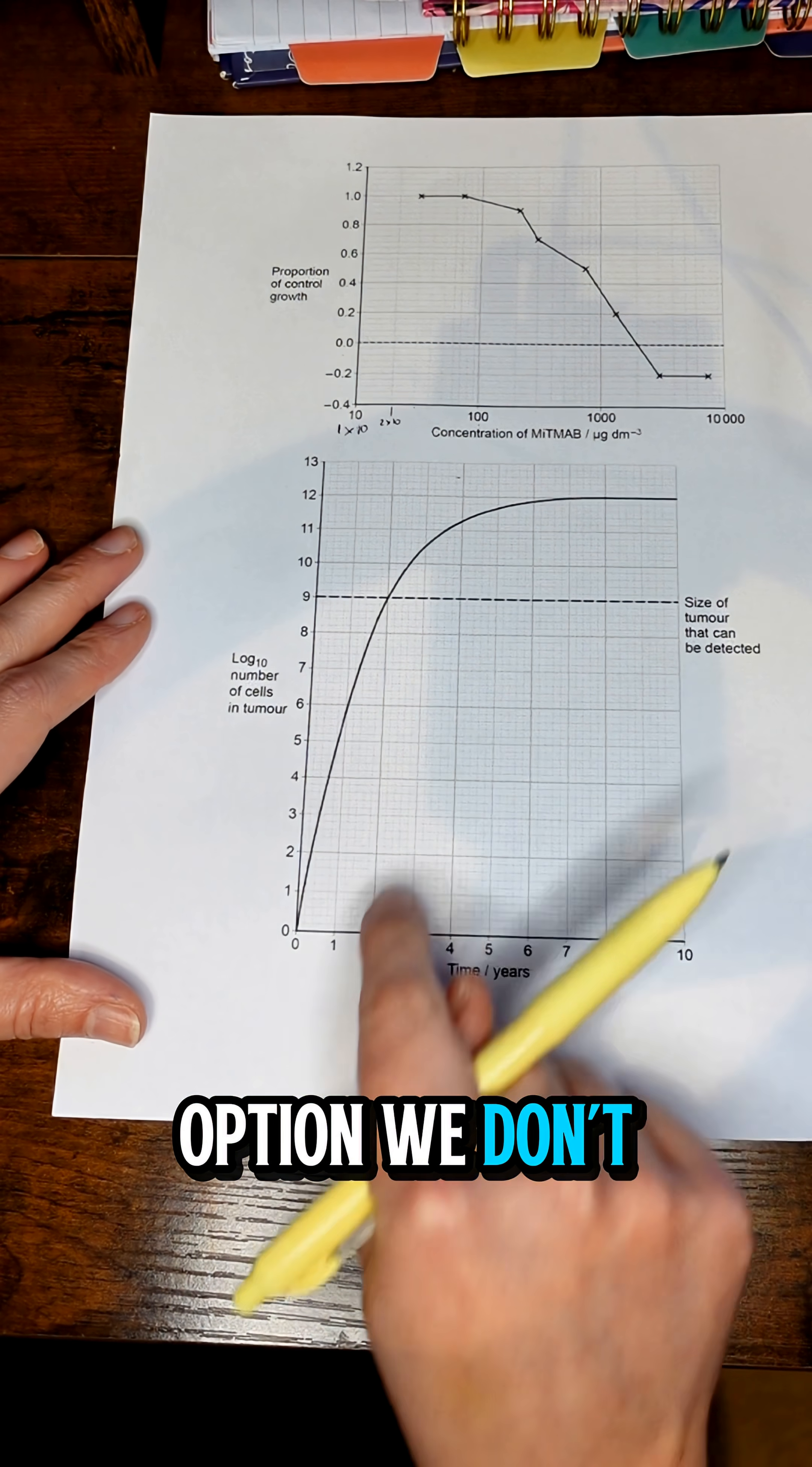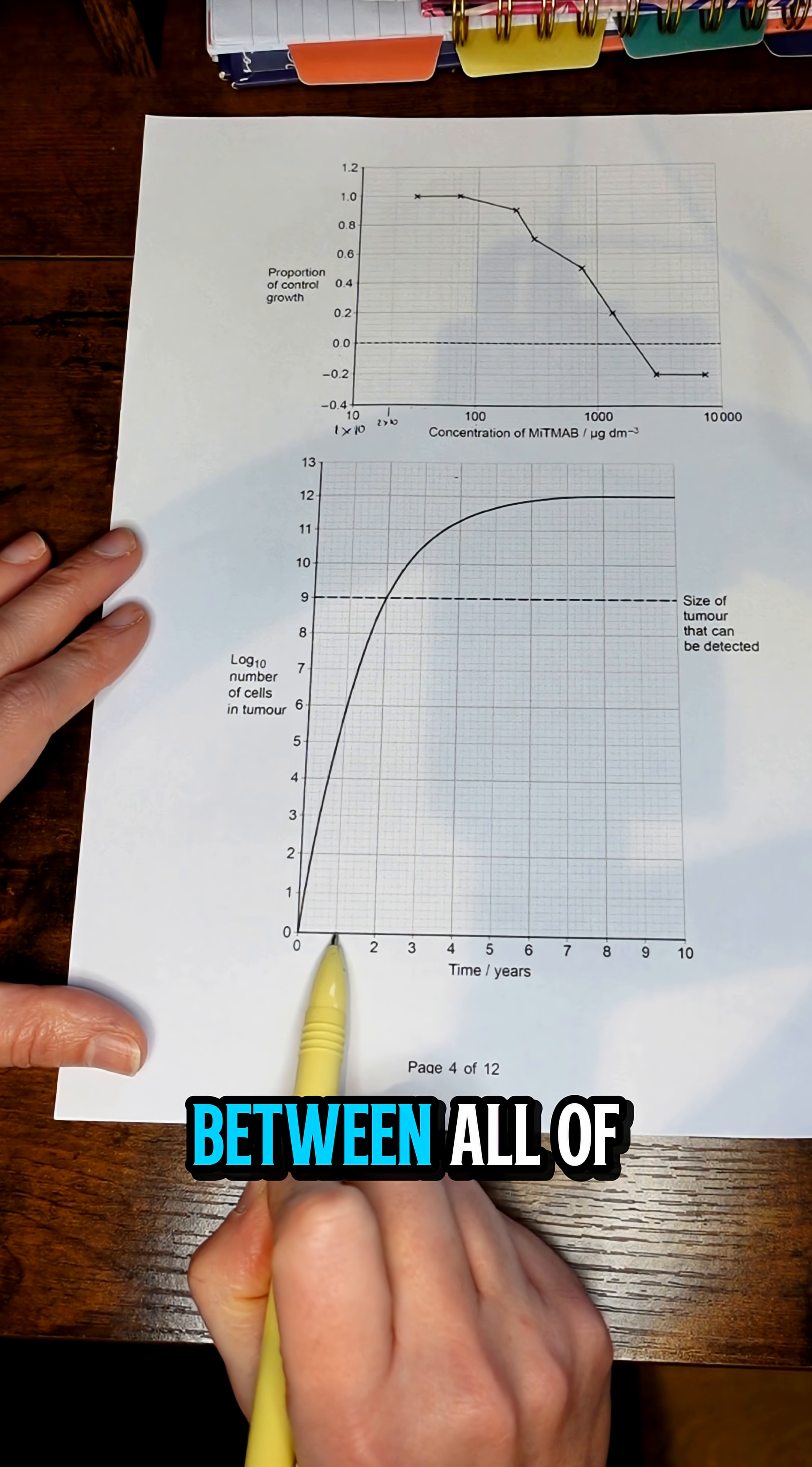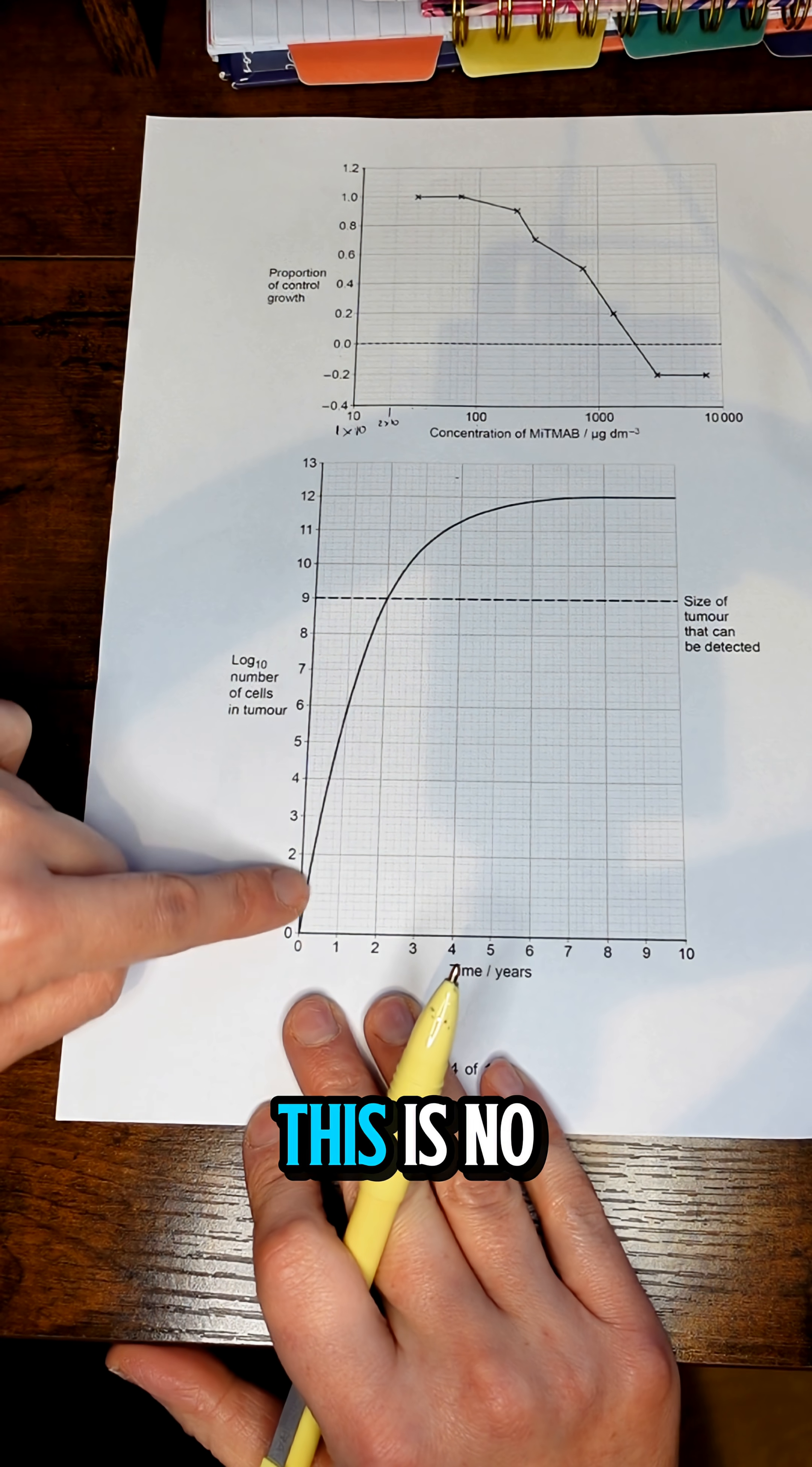Now in this option, we don't have log graph paper, and we can tell this because the increments between all of the lines is the same distance. However, we do have a log scale, so that means this is no longer the raw data - these were all converted into log values.